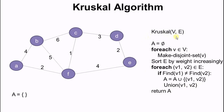Now let's talk about Kruskal's algorithm. We define A — A is used to store all the edges of the minimum spanning tree. Initially A is empty, and eventually we will return A. Then for each vertex of the graph, make a disjoint set with that vertex, so each vertex will be used to create a single-vertex disjoint set. Then sort all the edges by weight in increasing order, so the edge with the smallest weight will be at the front.